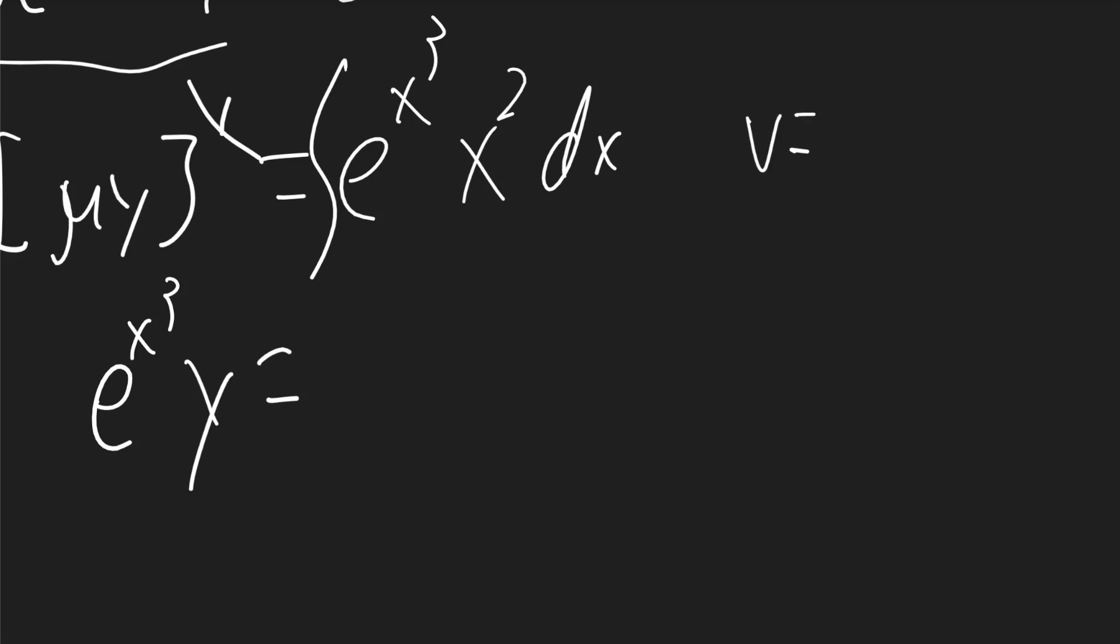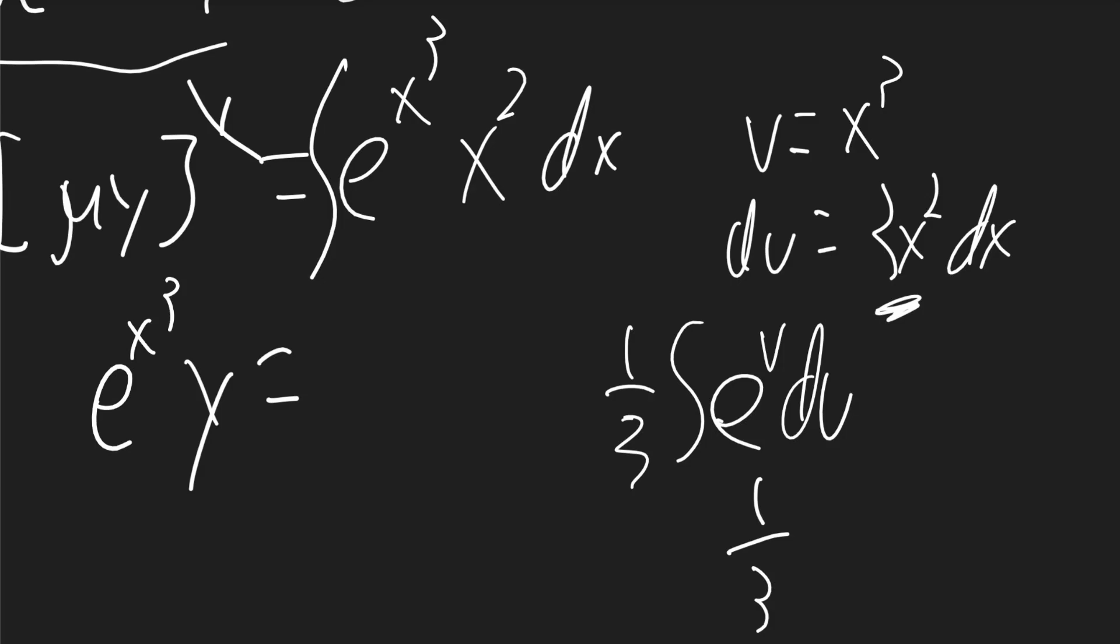We can use u substitution. u will be x cubed, du will be 3x squared dx. We already have this x squared, but we're missing the 3. So I'll bring a 1 third on the outside times the integral. It'll be e to the u du, which will be 1 third times e to the u, which is x cubed plus c.